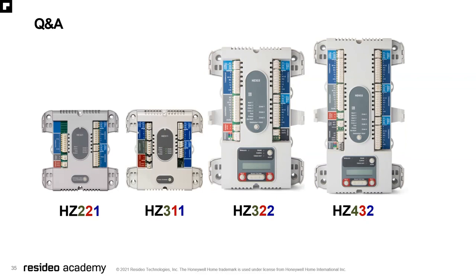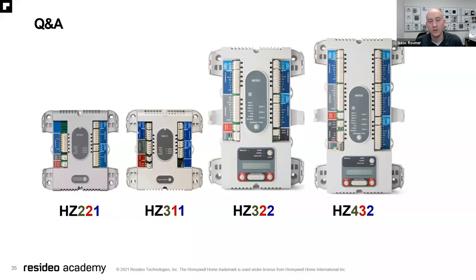The second question: how many wireless thermostats does the wireless adapter allow? The wireless adapter makes the zone panel wireless, so it really comes down to how many zones the panel can control. For example, the HZ322 gives you up to three wireless zones; the HZ432 gives you up to four wireless zones. You only use one wireless adapter per zone panel, and that allows you to make the whole panel wireless or select specific zones to be wireless.